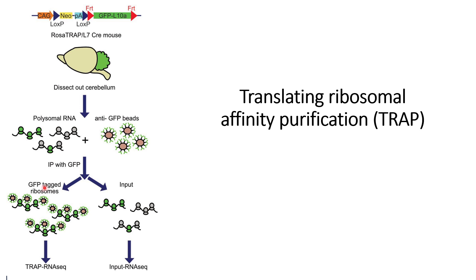Let us understand how this TRAP method works with the help of this example. They have made a plasmid sequence in which GFP is tagged to the L10a protein. This L10a protein is normally found in the large subunit of the ribosome, so it binds to the ribosome. They have used a specific promoter — a CRE promoter — to drive expression.